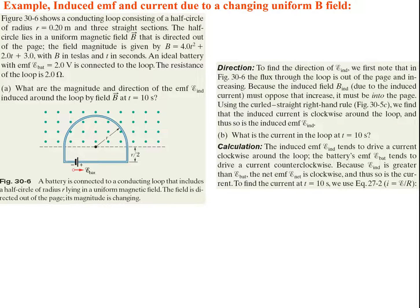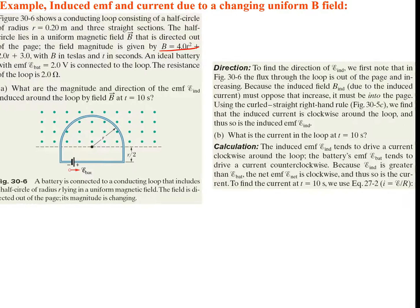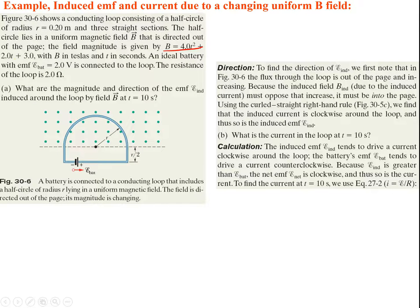The figure shows a conducting loop consisting of a half circle of radius R = 0.2 meters and three straight sections. The half circle lies in a uniform magnetic field B directed out of the page, given by B = 4.0T² + 2.0T + 3. The magnetic field is not constant, which means it's changing, so we will get an induced EMF. An ideal battery is also connected with 2 volts, and the resistance of the loop is 2 ohms. What are the magnitude and direction of the induced EMF around the loop by field B at t = 10 seconds?